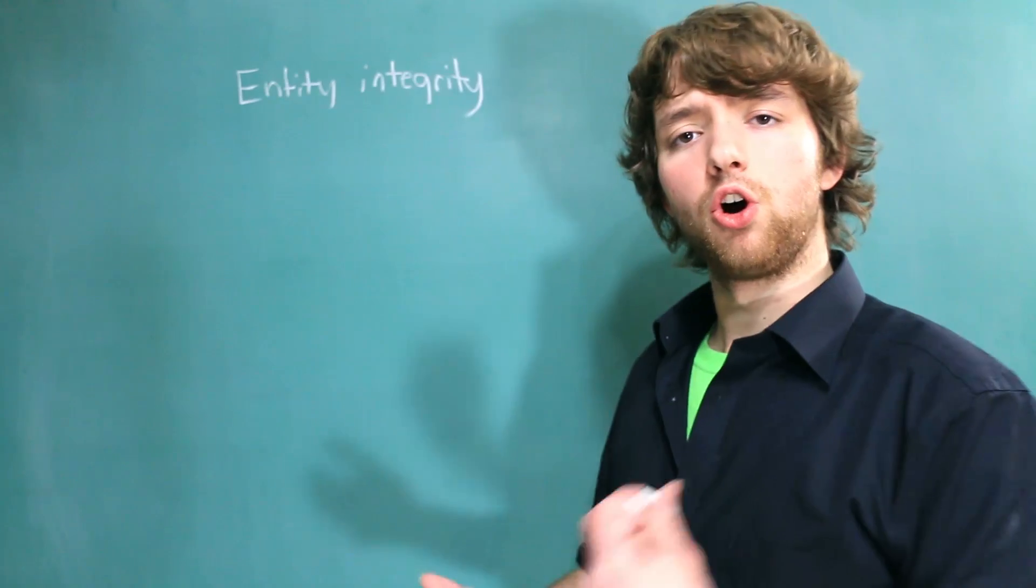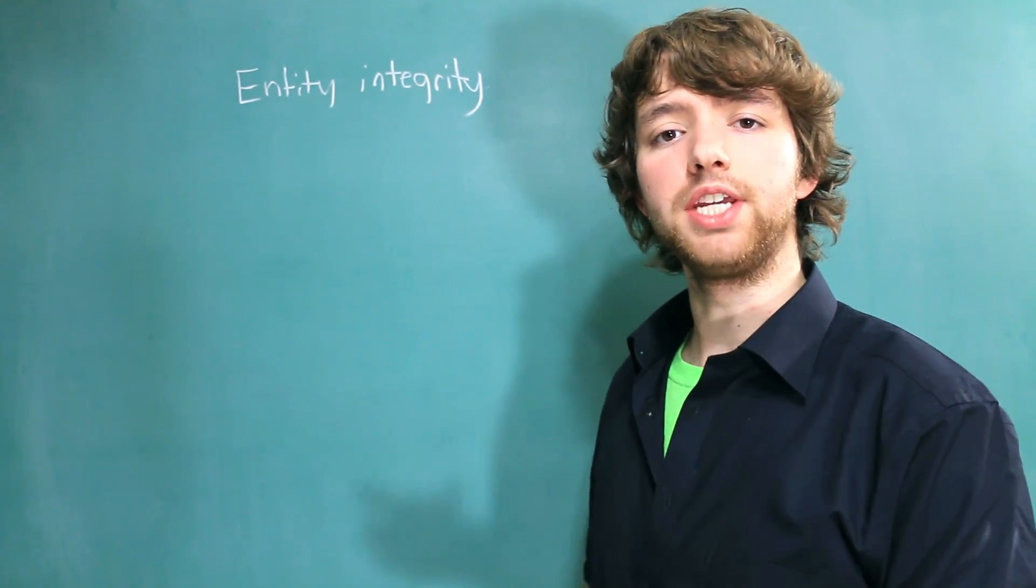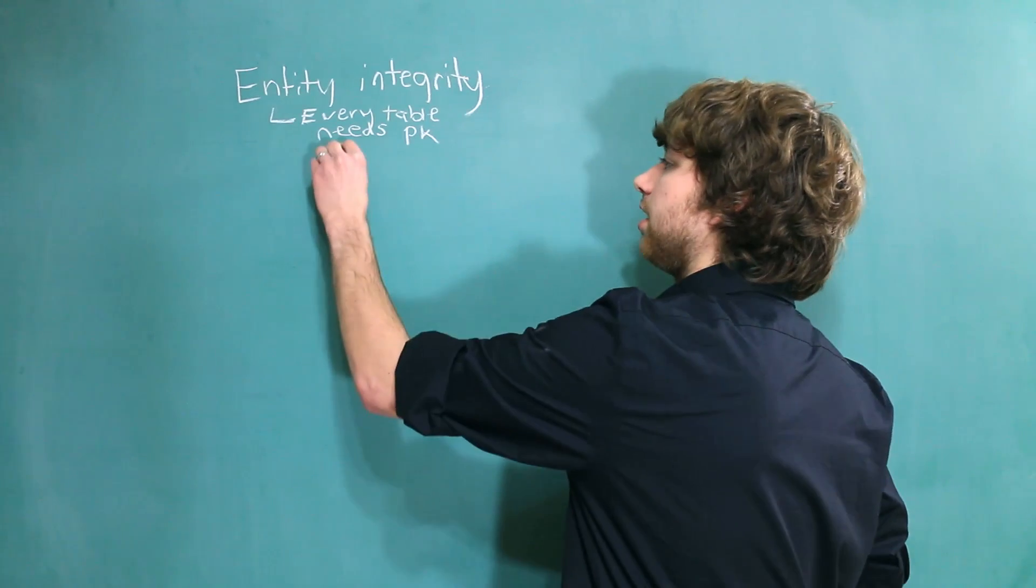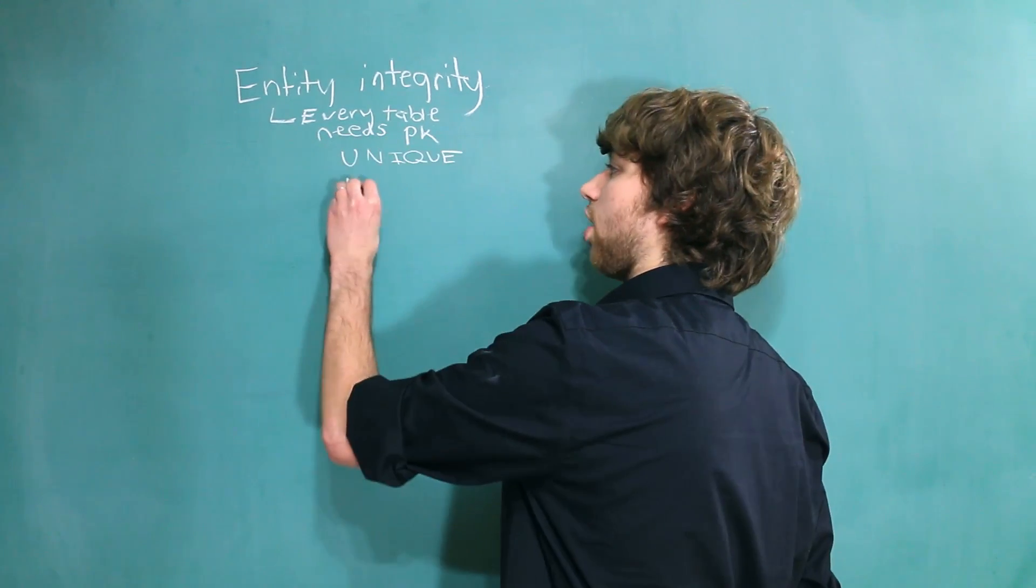Entity integrity is very simple. All it says is that every table needs a primary key. When you label something a primary key, it's automatically going to be unique and not null.